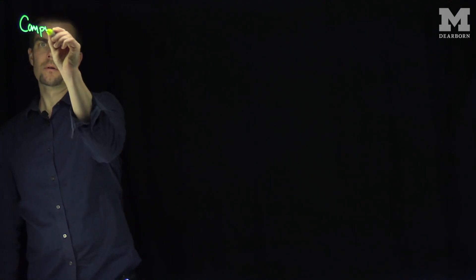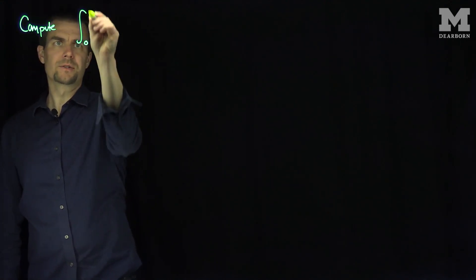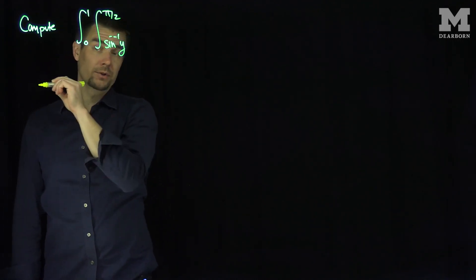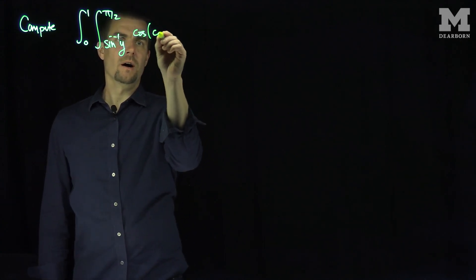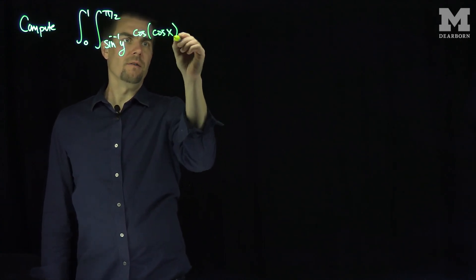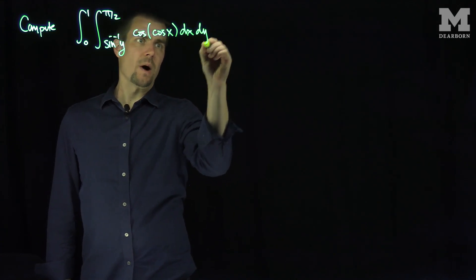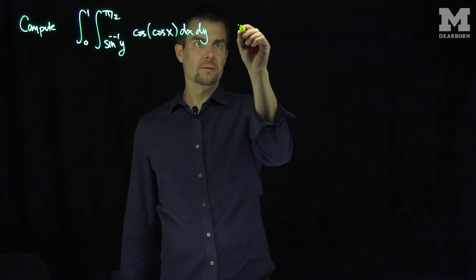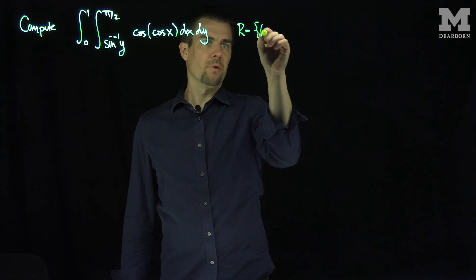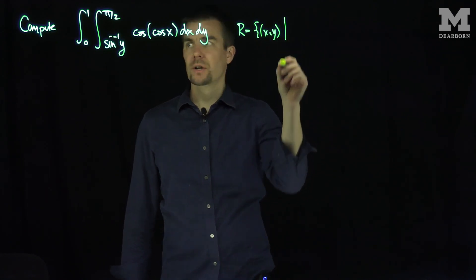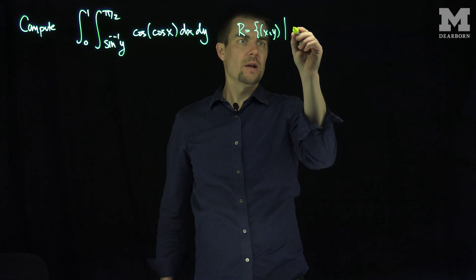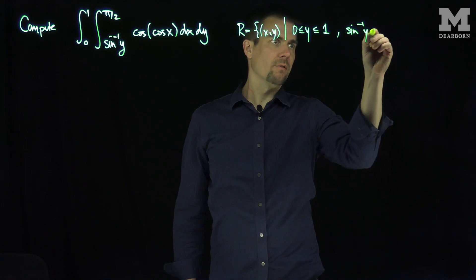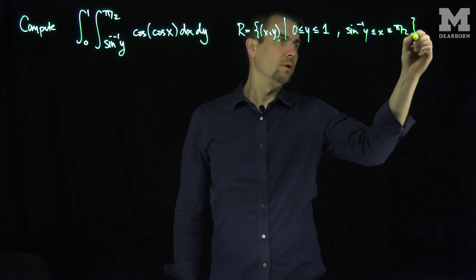Let's compute the integral from 0 to 1, the integral from the inverse sine of y up to pi over 2 of cosine of cosine of x, dx dy. What we have here is a type 2 region, where our region of integration R is the set of points x and y such that y is between 0 and 1, and x is between the inverse sine of y and pi over 2.